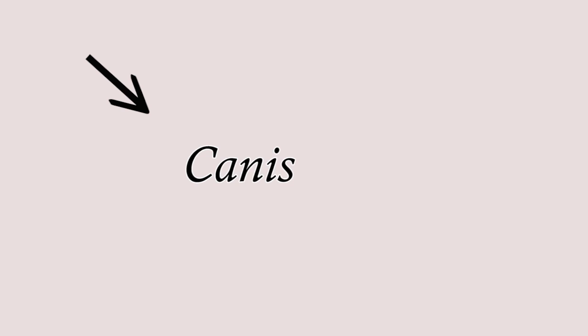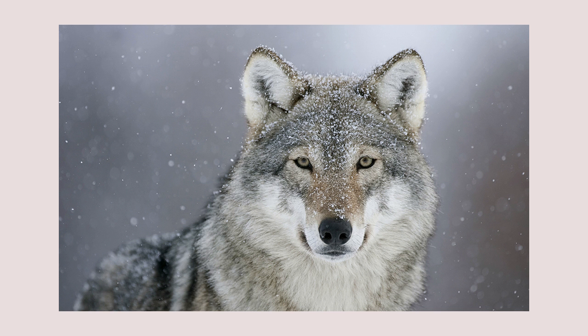Well, to be honest, it's a very simple system. Species are considered scientifically named when they have been given a two-part Latin name — for example, Canis and the second word rufus, which is the scientific name of the wolf.